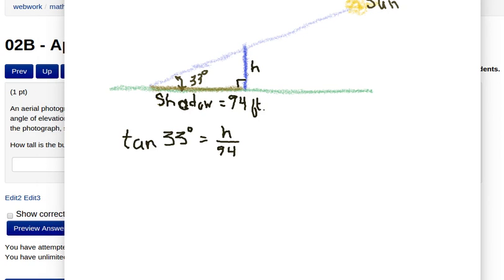Let's represent the height of the building by H. Then H is the opposite side. The length of the shadow is the adjacent side. So opposite over adjacent, that's a tangent. The tangent of 33 degrees is equal to H divided by 94. We're going to solve for that. Multiplying both sides by 94, we discover that the height is going to be 94 times the tangent of 33 degrees.